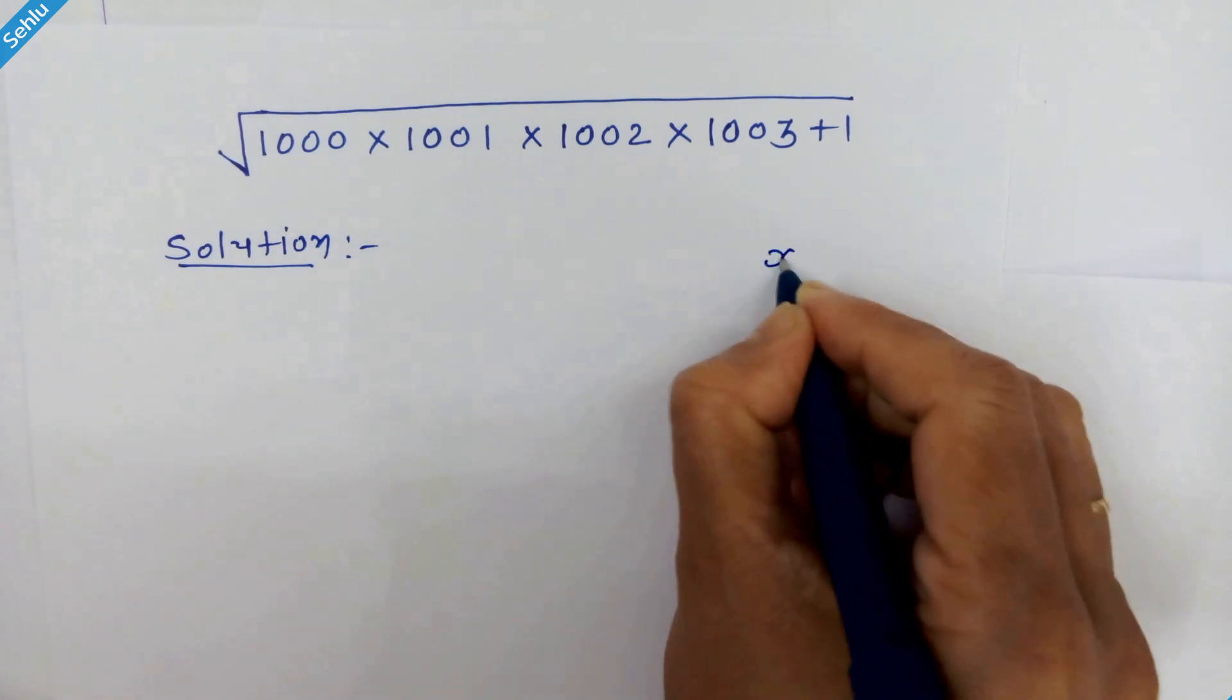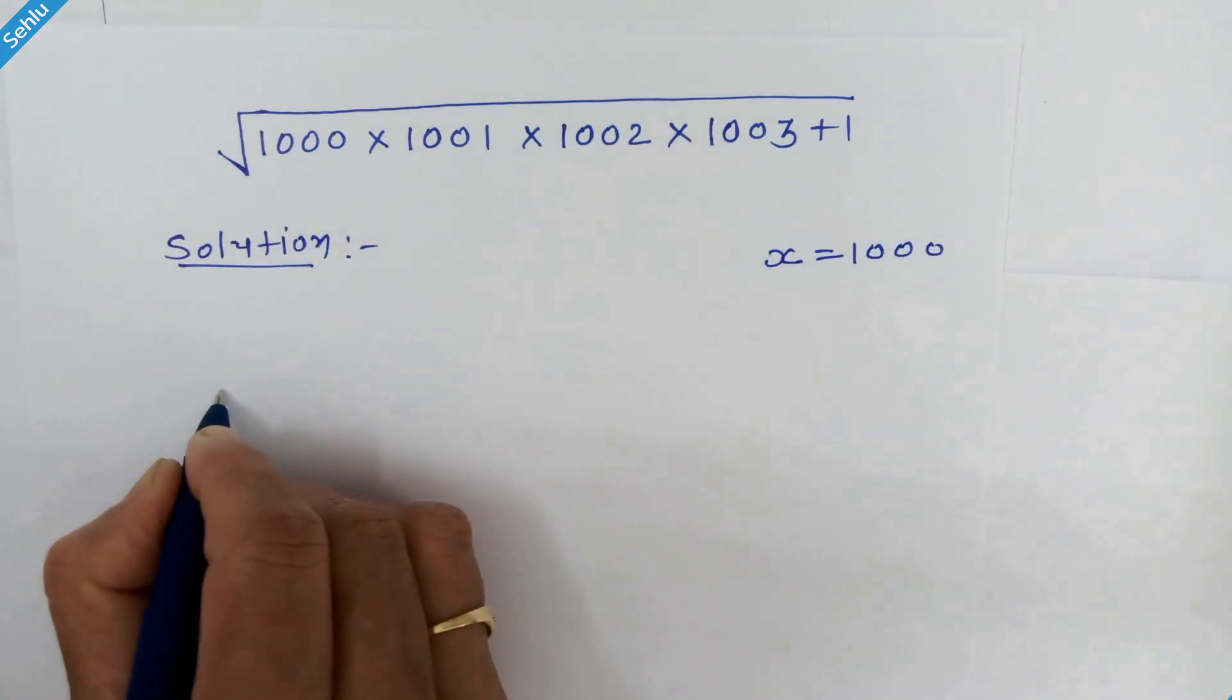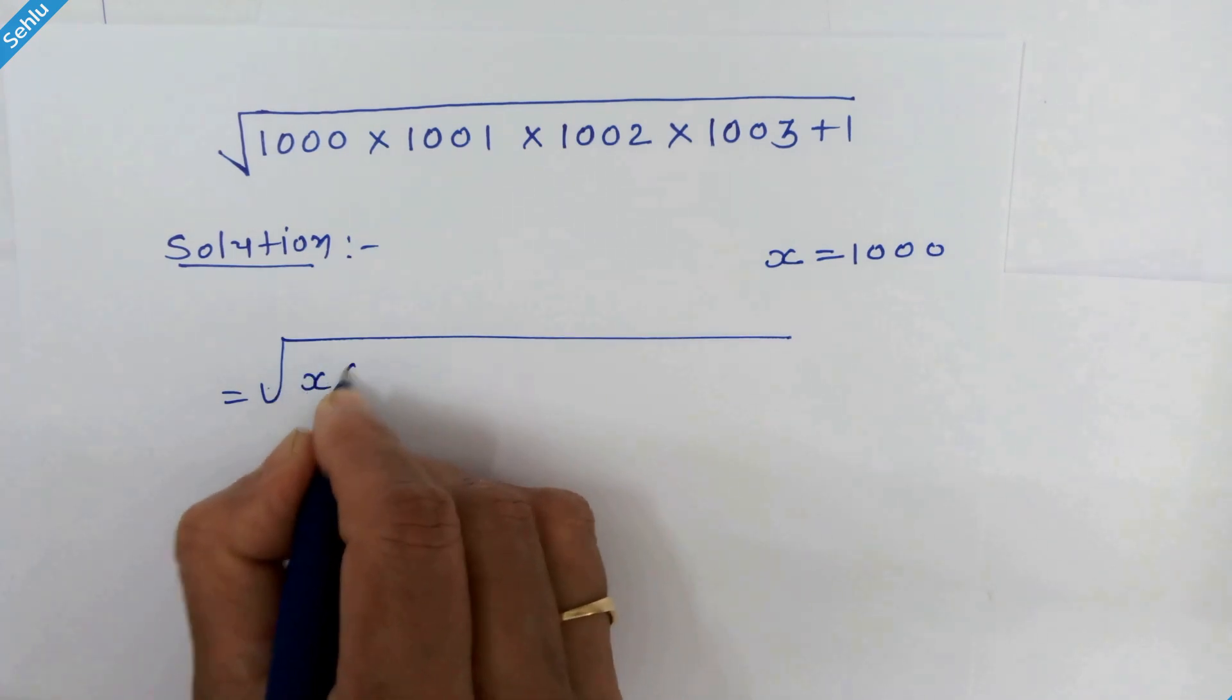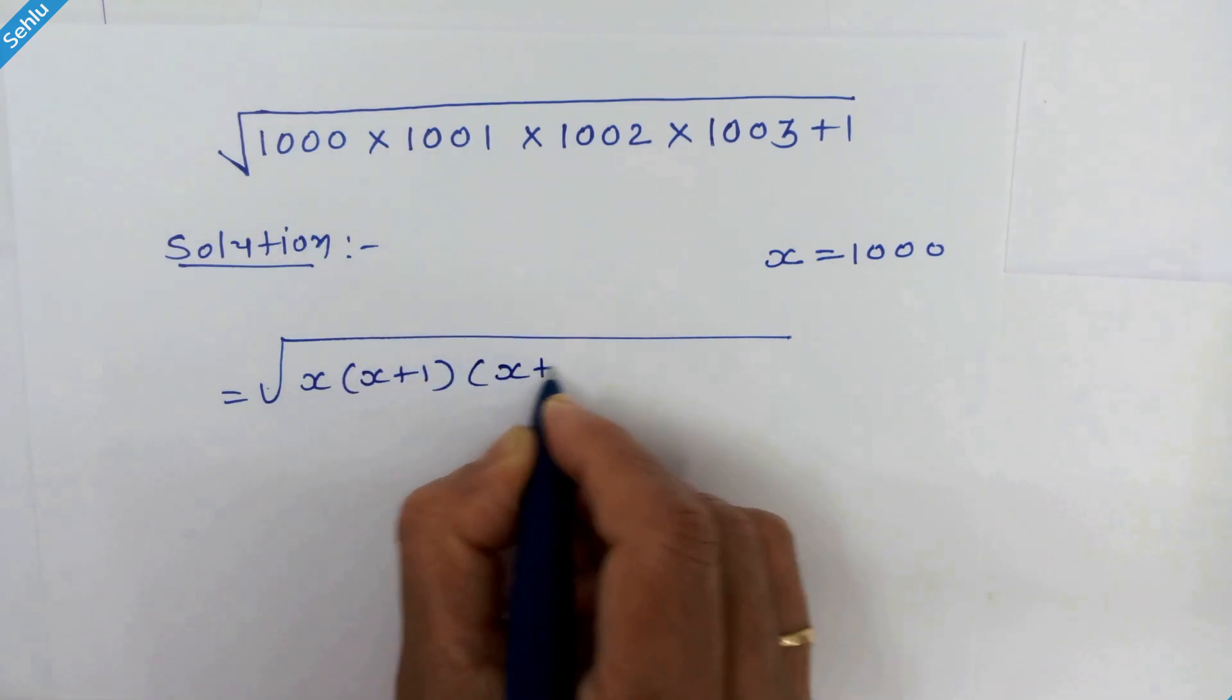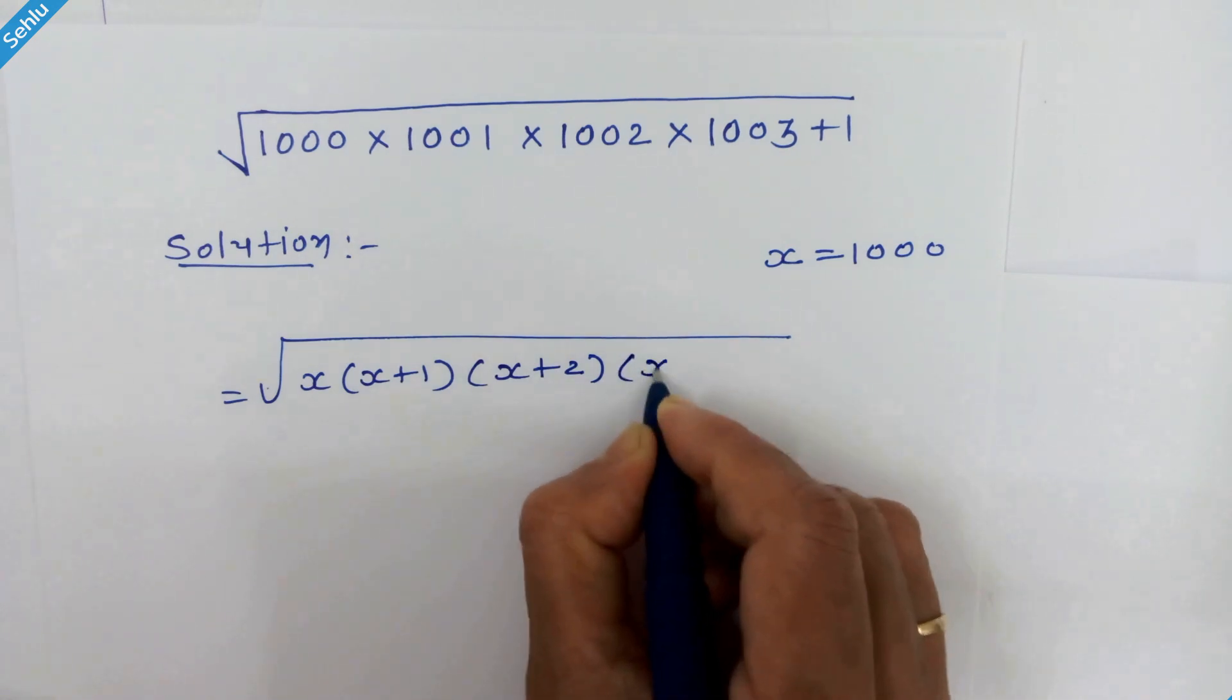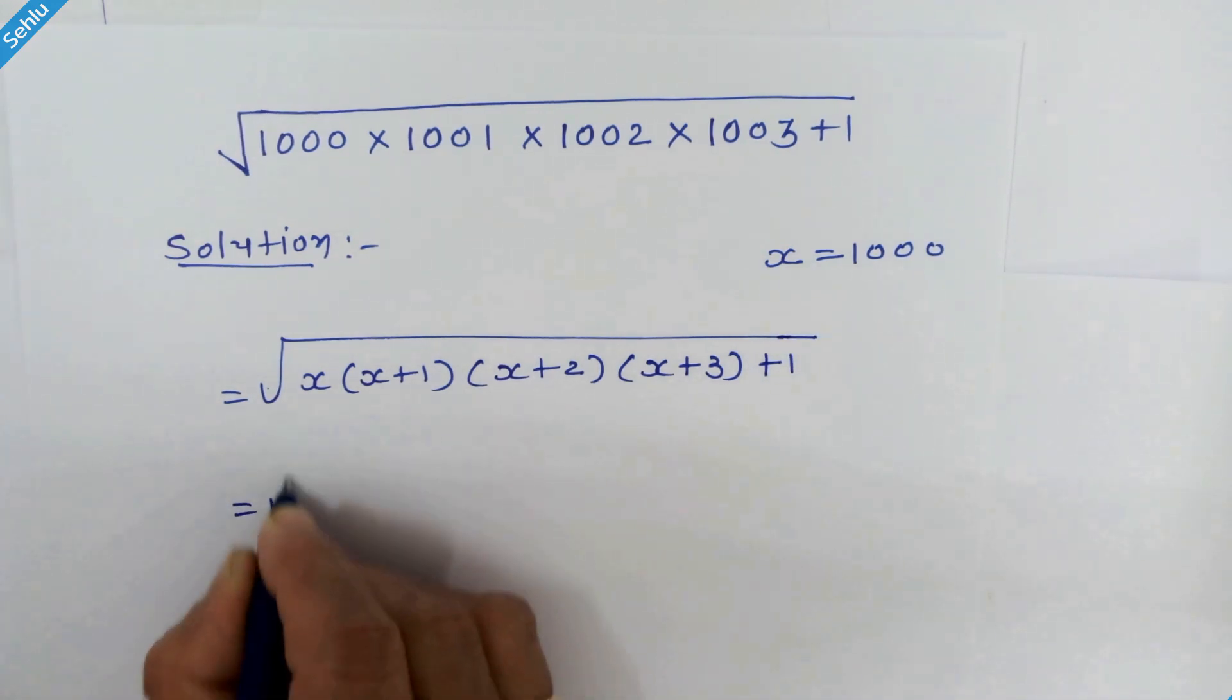We will take x in place of 1000 to make it more convenient to operate. So the equation will be x times x plus 1, in place of 1001, times x plus 2, in place of 1002, and x plus 3, in place of 1003, plus 1. Let's rearrange.